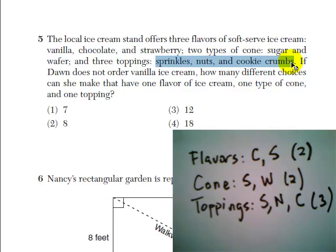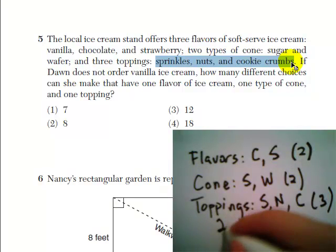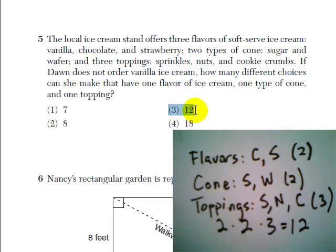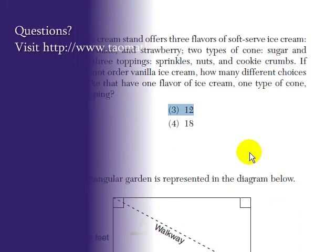So if we wanted to pick one flavor, one cone, one topping, how many ways can we do it? Well, let's multiply two times two times three, and that gives us twelve. And the answer is answer choice three. Thank you.